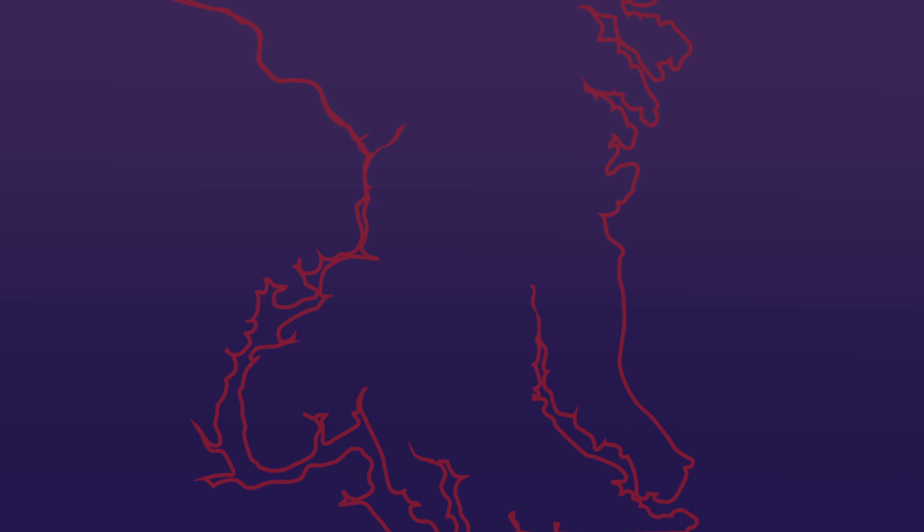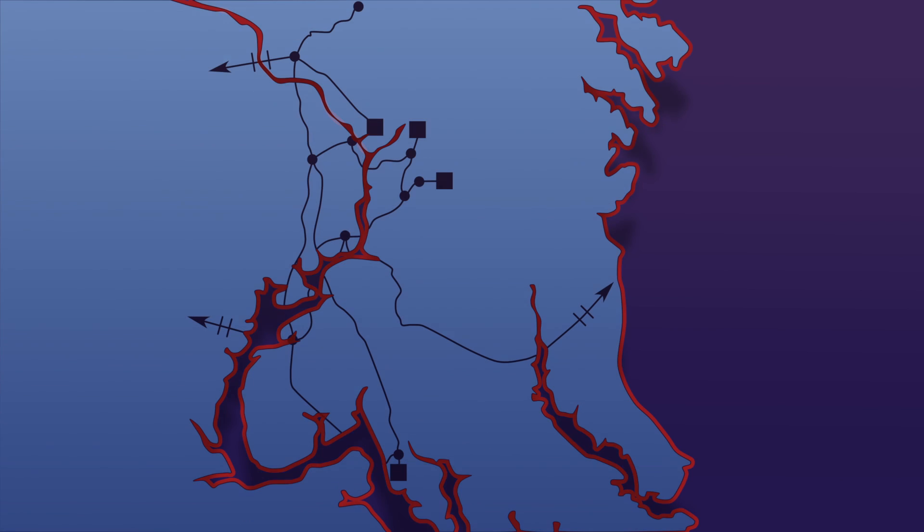To do your job in your system, you need to know something about what it takes to get electricity from where it's made to where it's used. You have to be able to recognize the major components that make up a transmission and distribution system, and you have to know what each component does to make the system work. To see how a T and D system works, we don't have to look at an entire power grid. Let's look at a smaller part of the big picture and see how an individual company and their consumers fit into the grid.